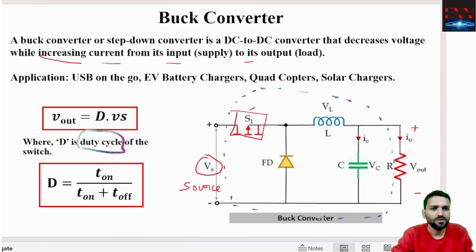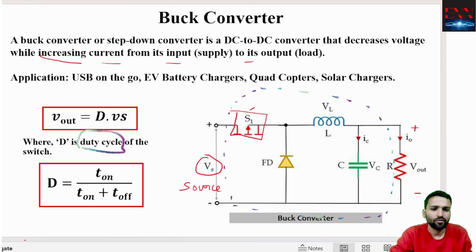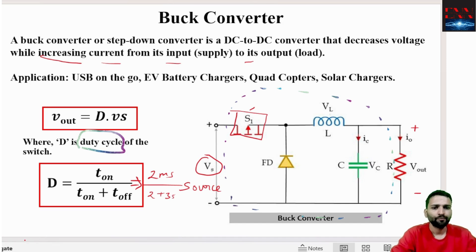Suppose the switch is ON for 2 ms and OFF for 3 ms, so the total time is 5 ms. The duty cycle here becomes 0.4. The output voltage will depend on this duty cycle. This is the case of a buck converter.